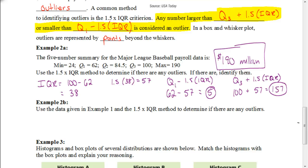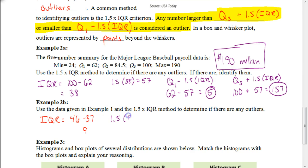Let's see how you did. The IQR from that data is found by taking Q3 minus Q1. For that set of data, Q3 was 46 and Q1 was 37, so 46 minus 37 gives us an IQR of 9. Now, one and a half times 9 gives us 13.5.